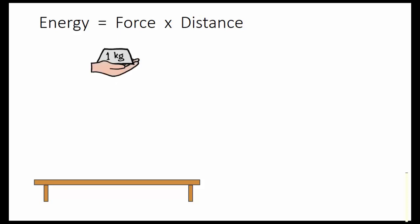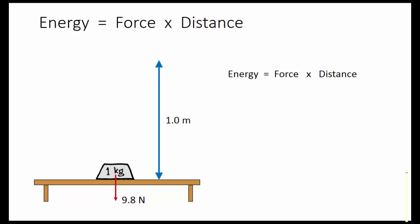If I allow the mass to press down against my hand, it does work against my hand. Energy equals force times distance. The mass exerts a downward force of 9.8 Newtons. If the distance is 1 meter, then the energy in moving the mass is 9.8 Newtons times 1 meter, which is 9.8 joules.